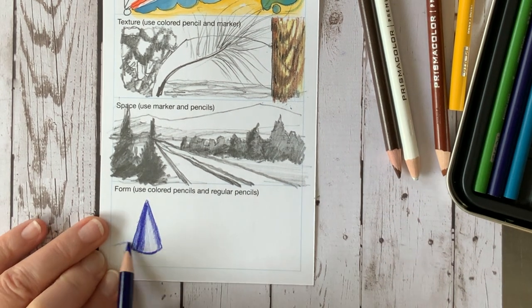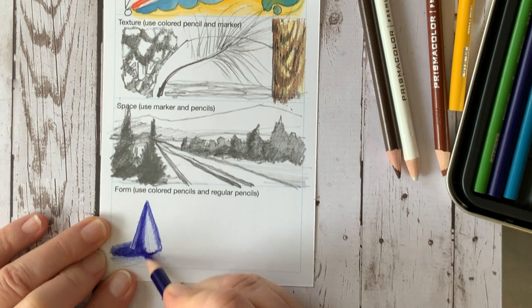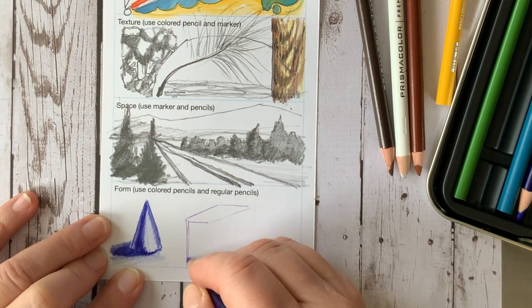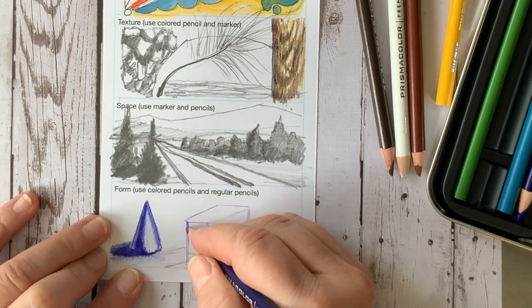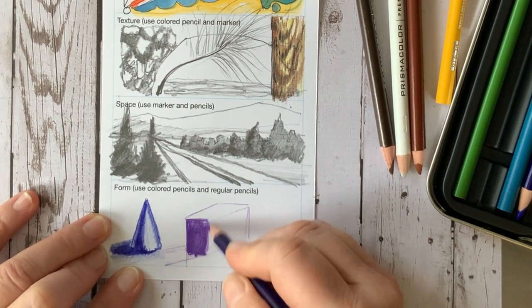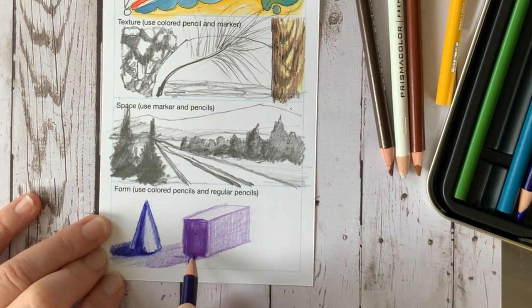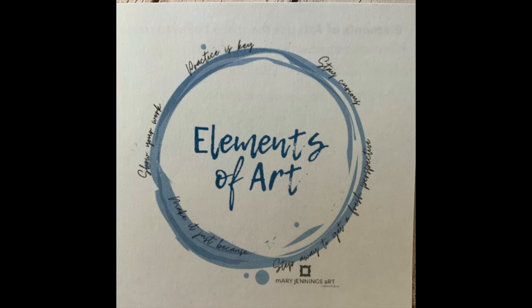And lastly, we have form. Form is really important because with the use of value, you're able to determine the structure of form. Yes, shape is important, but that cone would just be a cone if it didn't have value as well as using the element of shadow underneath.